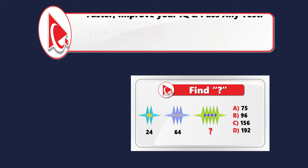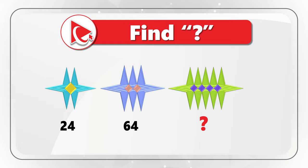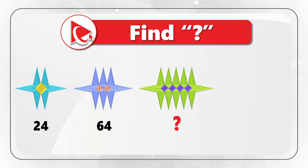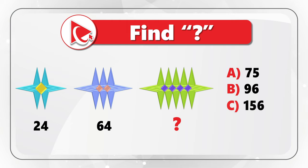You are presented with three sets of stars. Each set is a different color. Underneath each set there are numbers. The first set has the number 24, the second set has the number 64, and the third set has a missing number represented by a question mark, which you need to calculate and select from four possible choices: choice A 75, choice B 96, choice C 156, and choice D 192.